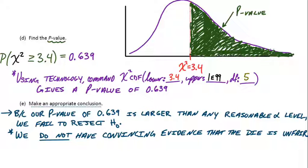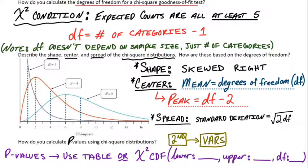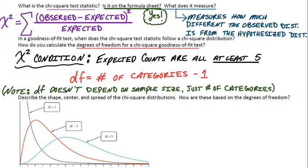All right, that concludes our introduction to chi-square goodness-of-fit tests. We talked about the shapes of these things. They're definitely right skewed. We talked about how to get the degrees of freedom. We also talked about the formula, which is on the formula sheet, for the chi-square test statistic. So that is all for these notes. I'll see you in class.